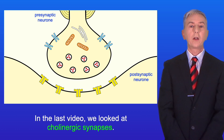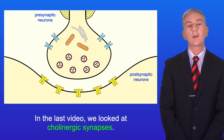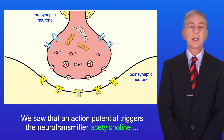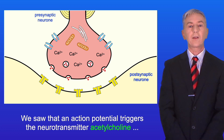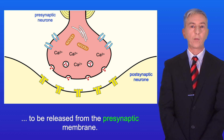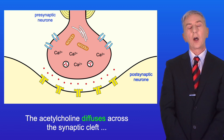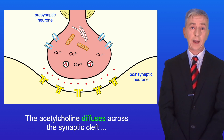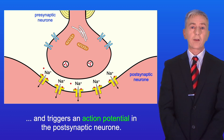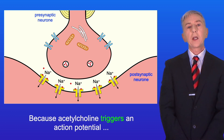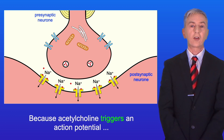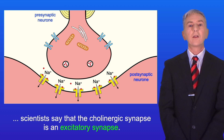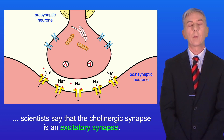In the last video we looked at cholinergic synapses. We saw that an action potential triggers the neurotransmitter acetylcholine to be released from the presynaptic membrane. The acetylcholine diffuses across the synaptic cleft and triggers an action potential in the postsynaptic neuron. Because acetylcholine triggers an action potential, scientists say that the cholinergic synapse is an excitatory synapse.